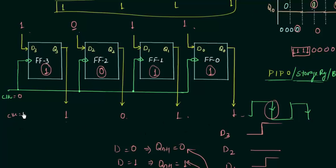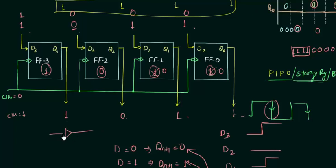Once you introduce the clock and we have a falling edge, the flip flop is operational and whatever value is present is going to be stored again. For example, if we now have 1, 0, 0, 0, those values will override the previous ones. That's why we call it a buffer - whatever value I give, I have it as the output. If I give 1, I get 1; if I give 0, I get 0. It acts as a buffer register and as a storage register. If you want to store 1, 0, 1, 1, just give it, remove the clock, and 1, 0, 1, 1 will be stored until you want it.